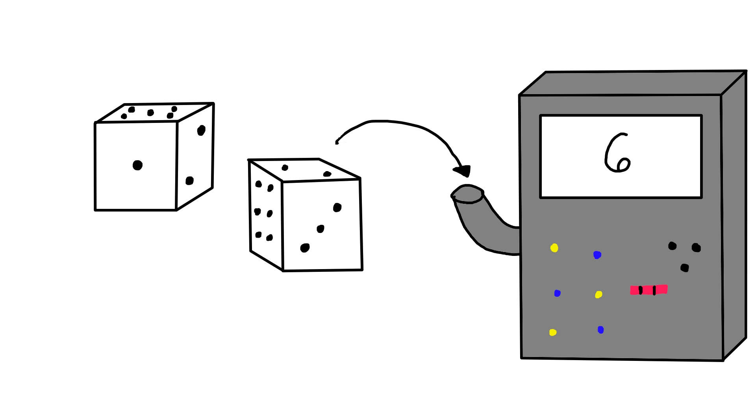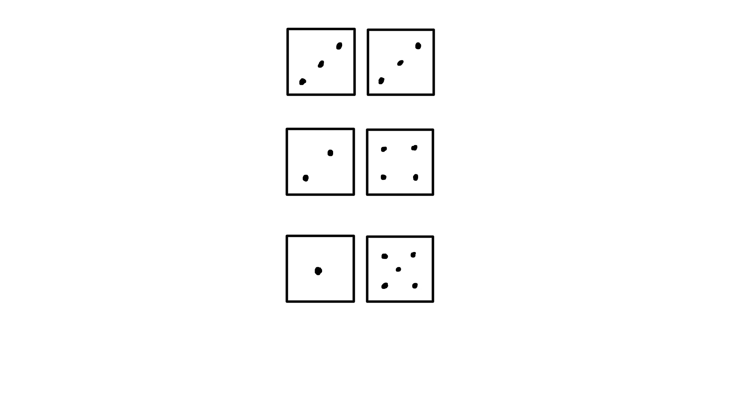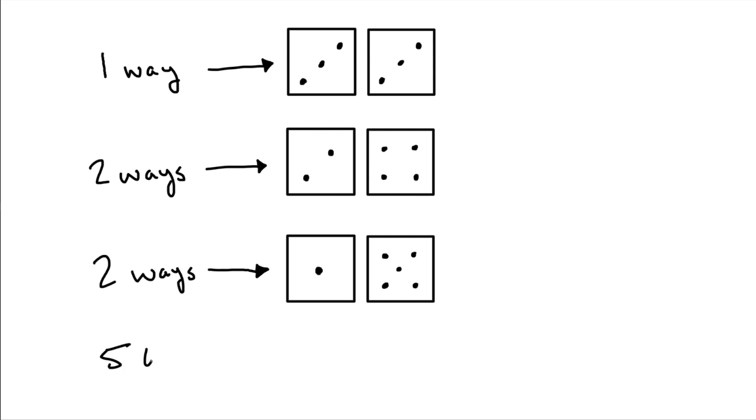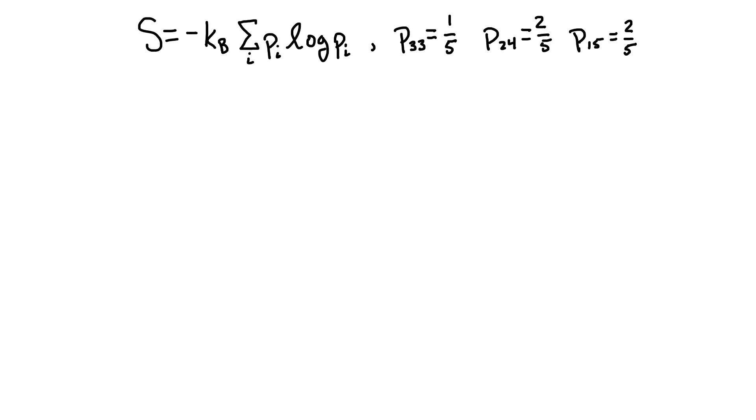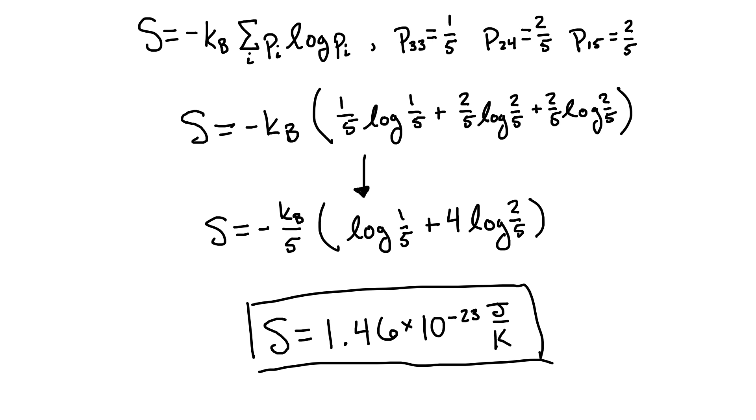Assuming that I can't tell the difference between the dice, there are three different ways of rolling a 6 with two dice. But they aren't all equally probable. For example, there are two ways of rolling a 4 and a 2, since either the first or the second die can be the 4 and the other the 2. But there's only one way to roll two 3s. So even though I only have three outcomes, since two of them can be rolled in two different ways, I really have five possible final states. The probability of each outcome will just be the number of ways I can roll that combination divided by the total number of states. Now, we can just plug these numbers into our formula we found, and bam, we got ourselves the entropy.